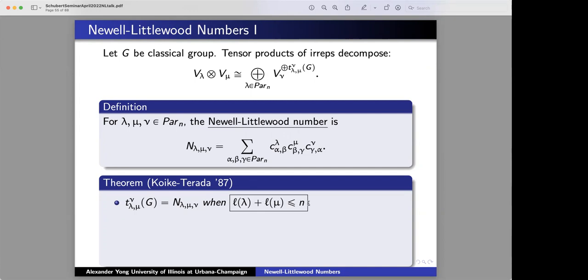And the hypothesis I've put in the box here is called the stable range. You assume the length of lambda, the number of rows of the Young diagram, plus the number of rows of mu is at most N, where N is the same thing in your definition of the classical group.